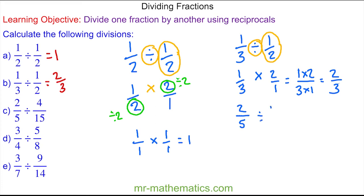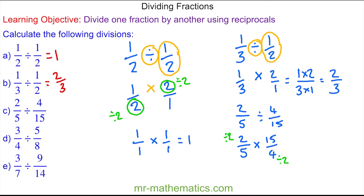For question c, we have two fifths divided by four fifteenths. Again, we change the division to multiplication and work out the reciprocal of four fifteenths, which is fifteen over four. In this question we can cross simplify: we divide this by two and this by two, and we divide this by five and this by five.